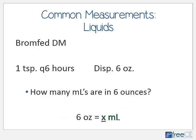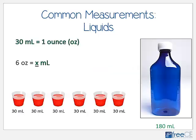Let's look at a real-world example. We get a prescription for Bromfed DM — directions are one teaspoon every six hours, dispense six ounces. How many milliliters are in six ounces? The equation is: six ounces equals X number of milliliters. Disregard information you don't need — the teaspoon dosing and frequency aren't needed here. Stick to the issue: how many milliliters is six ounces?